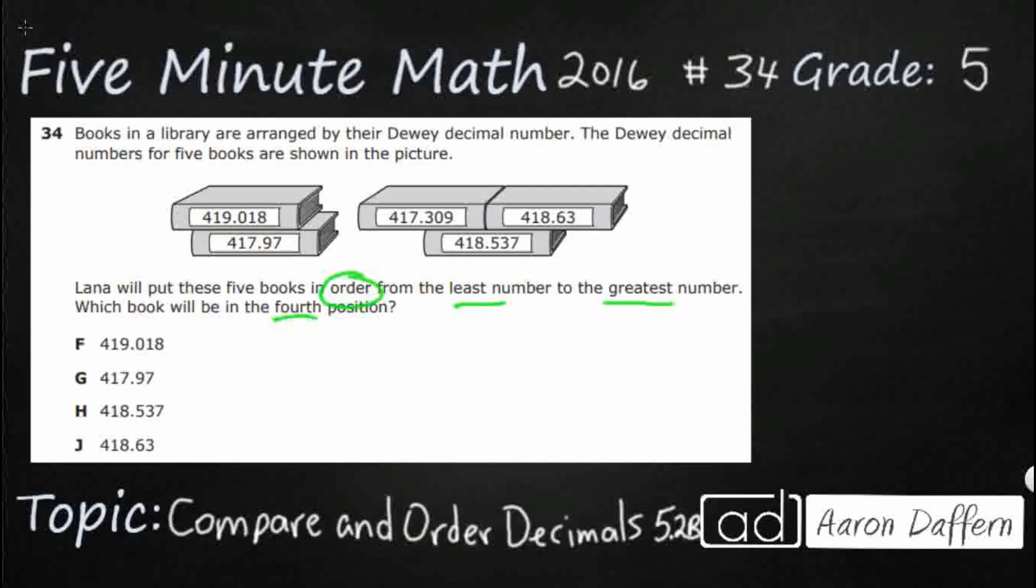First let's just list these numbers here. Let's first figure out what our order is going to be. So I am going to take just this first one right here, 419.018. I have got 18 thousandths, so that is going to go to the thousandths spot.